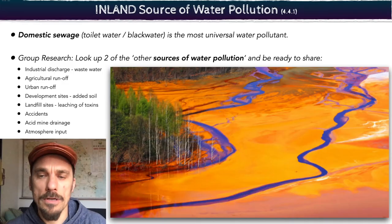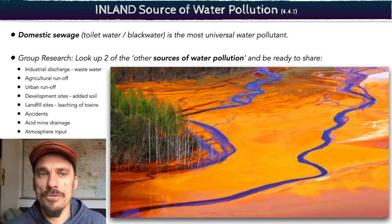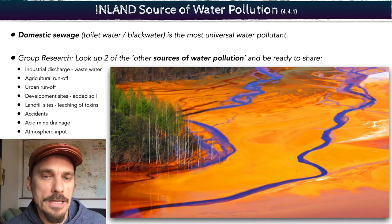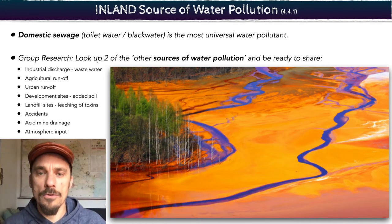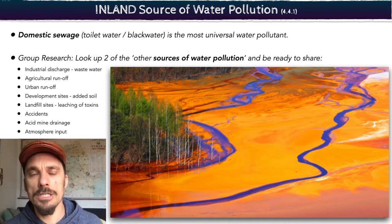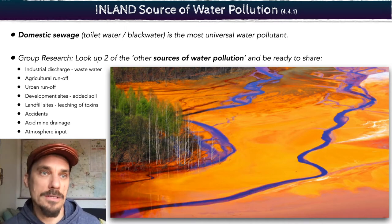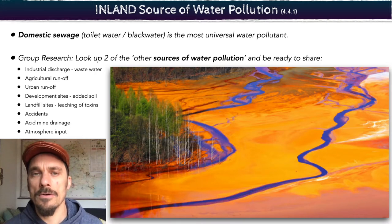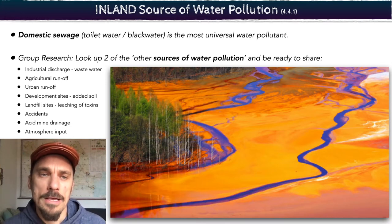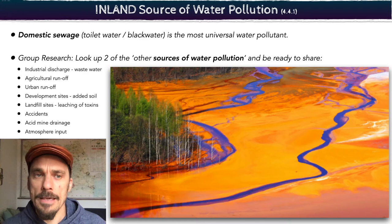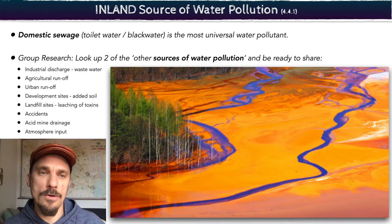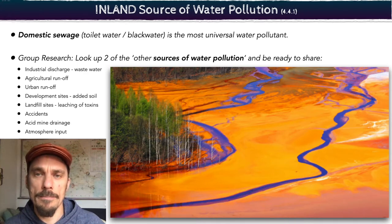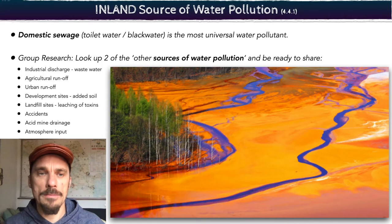When we look at the source of pollution, that's broken down into two things: inland sources or marine sources. For inland sources, humans are at the center of this. Domestic sewage — things like toilet water, also known as black water — is the most universal source of water pollution. There are a lot of other types of water pollution listed here; do a quick search to dig into some of those.